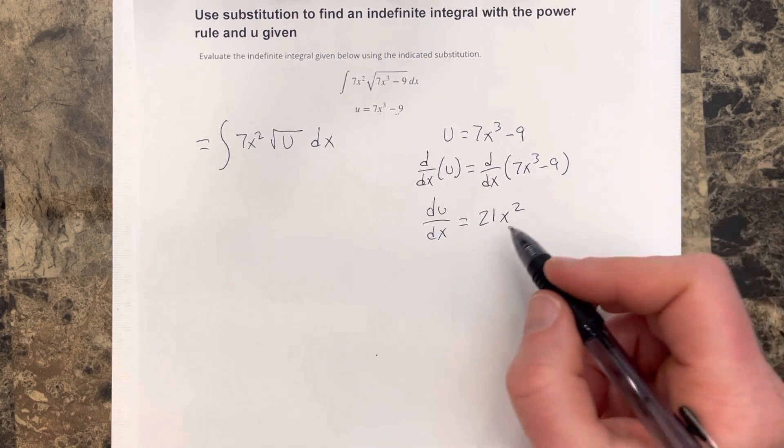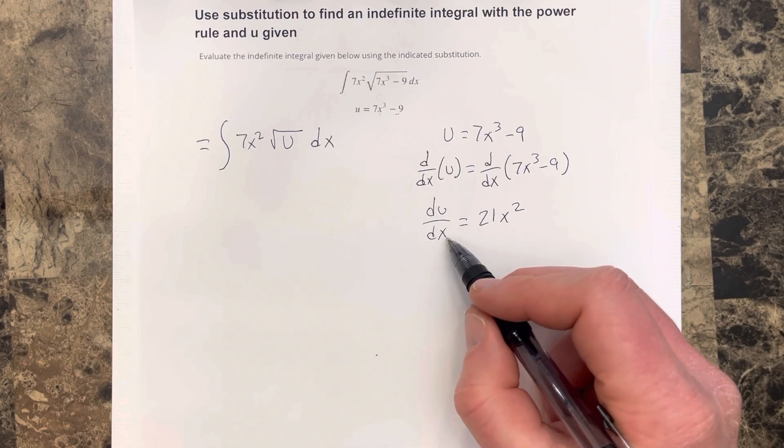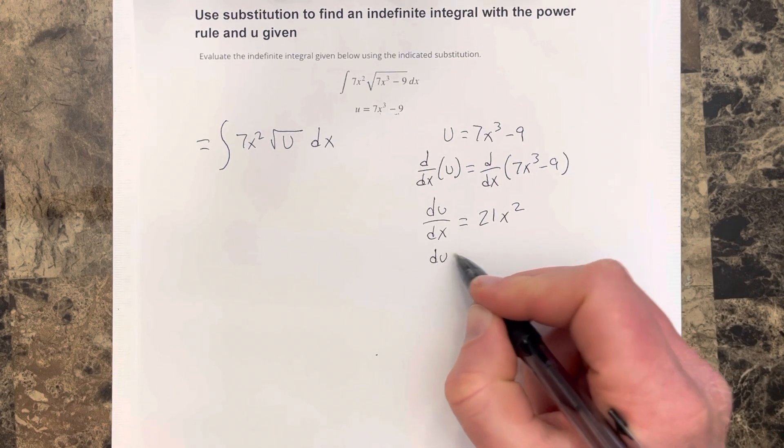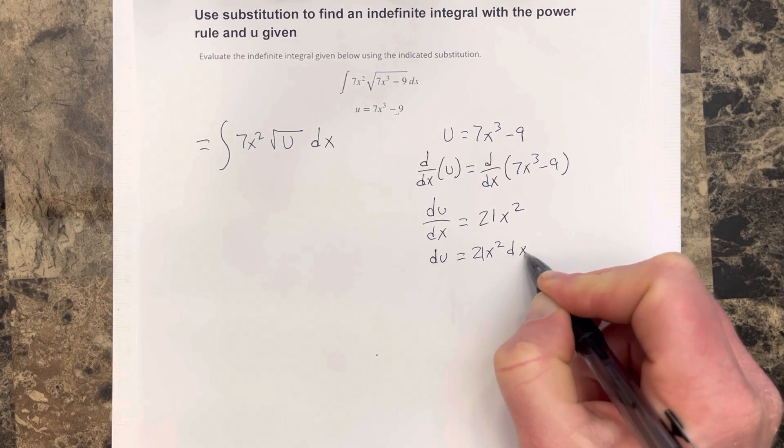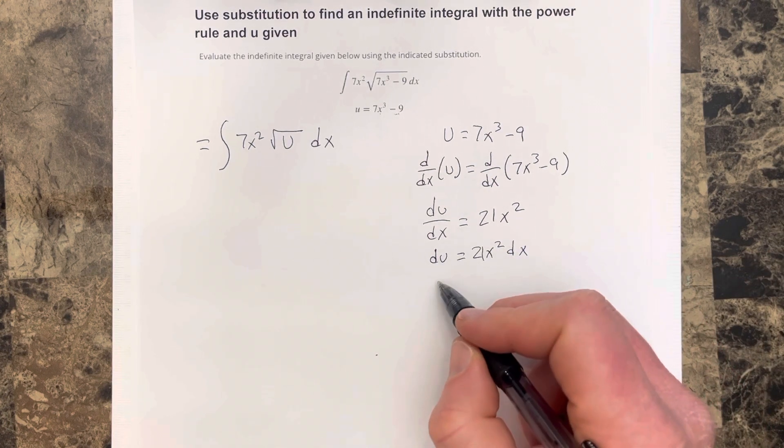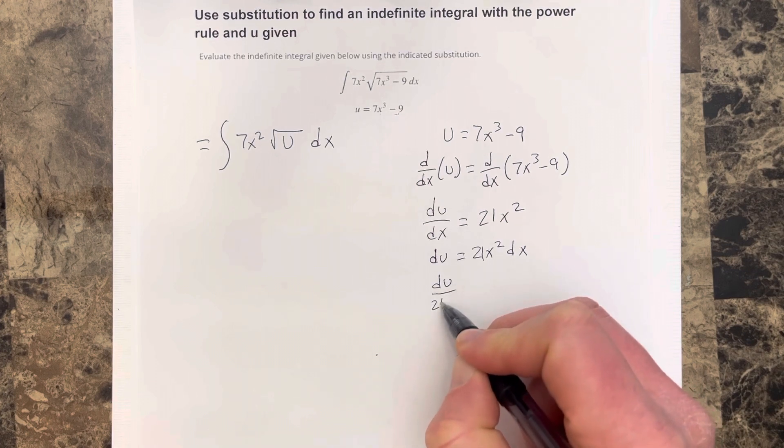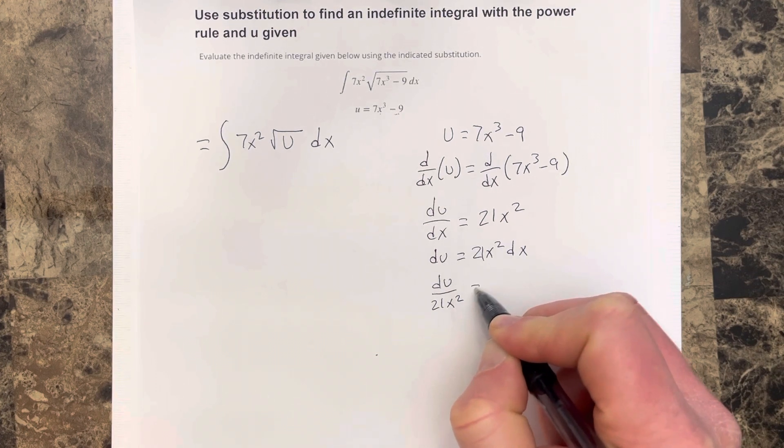Derivative of negative 9 is 0. I'm going to solve for dx here. Multiply by dx, I get du equals 21x squared dx. Divide by 21x squared on each side. I get du over 21x squared is equal to dx.